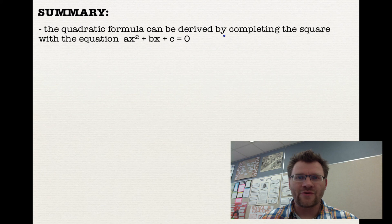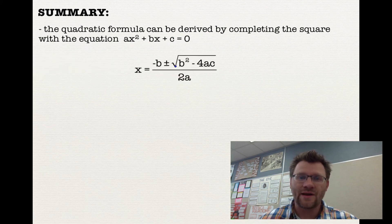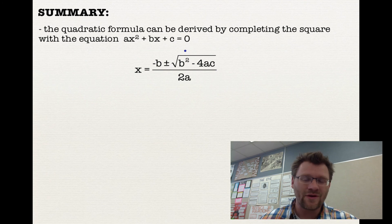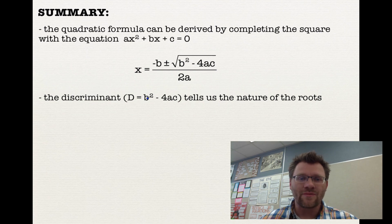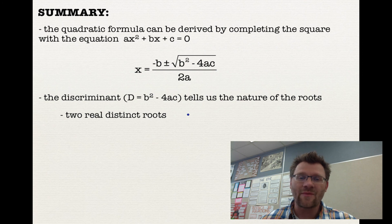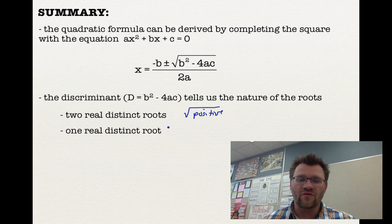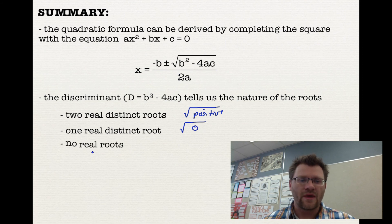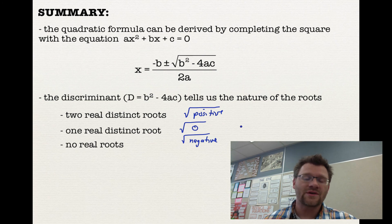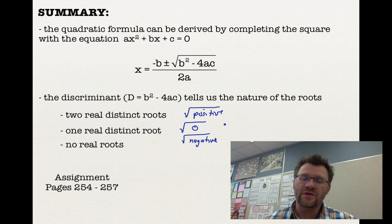In summary: the quadratic formula x = (−b ± √(b² − 4ac)) / 2a can be derived by completing the square on ax² + bx + c = 0, and yes, you will need to know how to do that — it will be on the exam. The discriminant D = b² − 4ac tells us the nature of the roots: if D > 0, two distinct real roots; if D = 0, one distinct real root (x = −b/2a); if D < 0, no real roots, meaning the parabola doesn't cross the x-axis. Your assignment is on pages 254 to 257. Good luck and we'll see you in class.